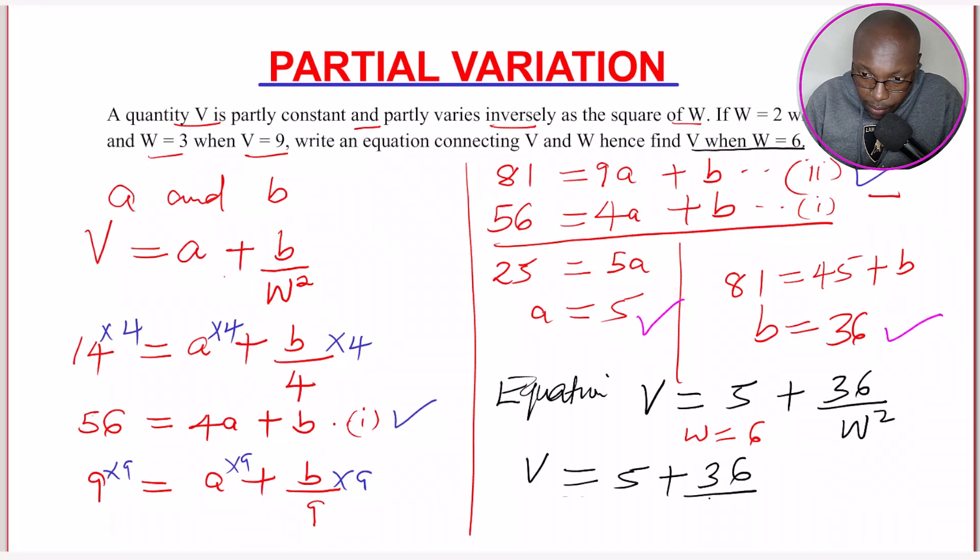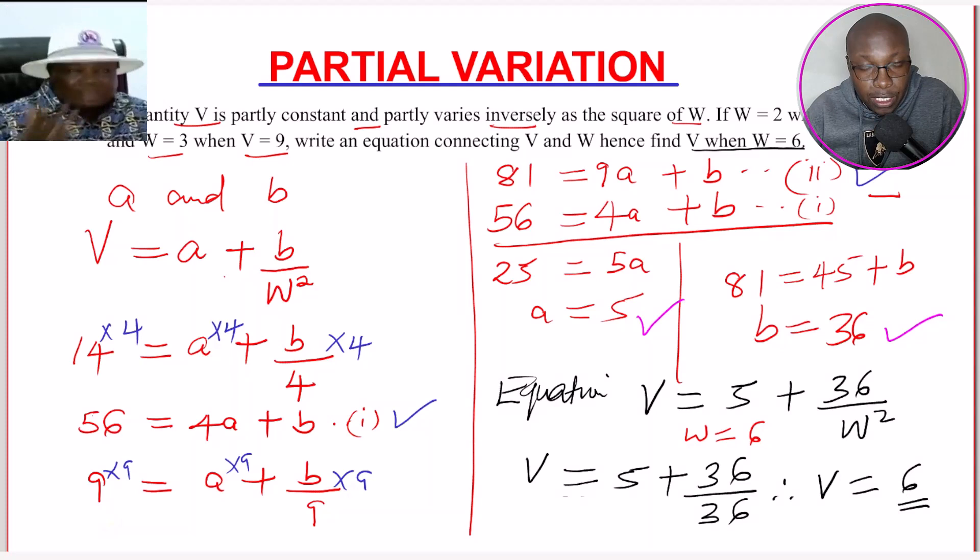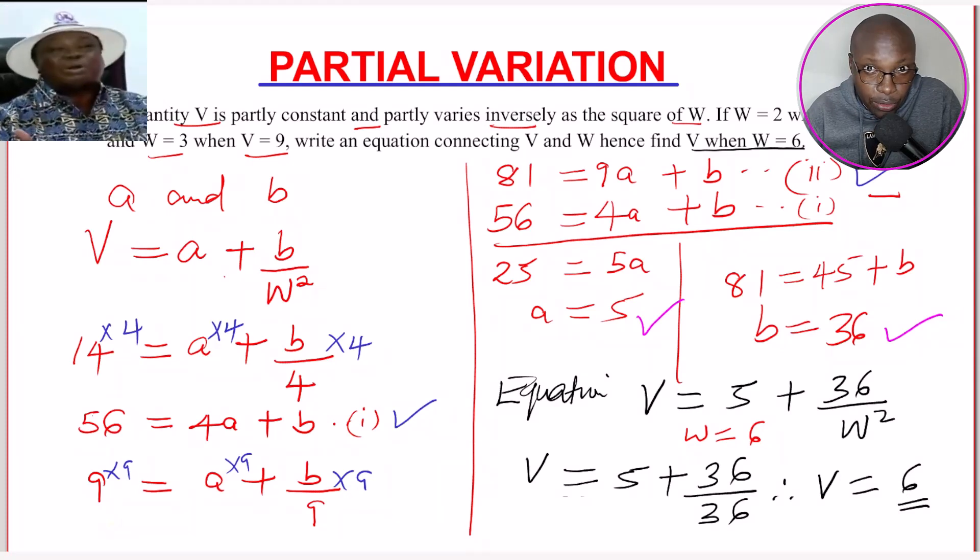This will be 36. Simple as that. So when you work out this, you'll get V to be given by 5 + 36/36. That is 5 + 1. And this will give 6. That is basically how you're supposed to answer that question.